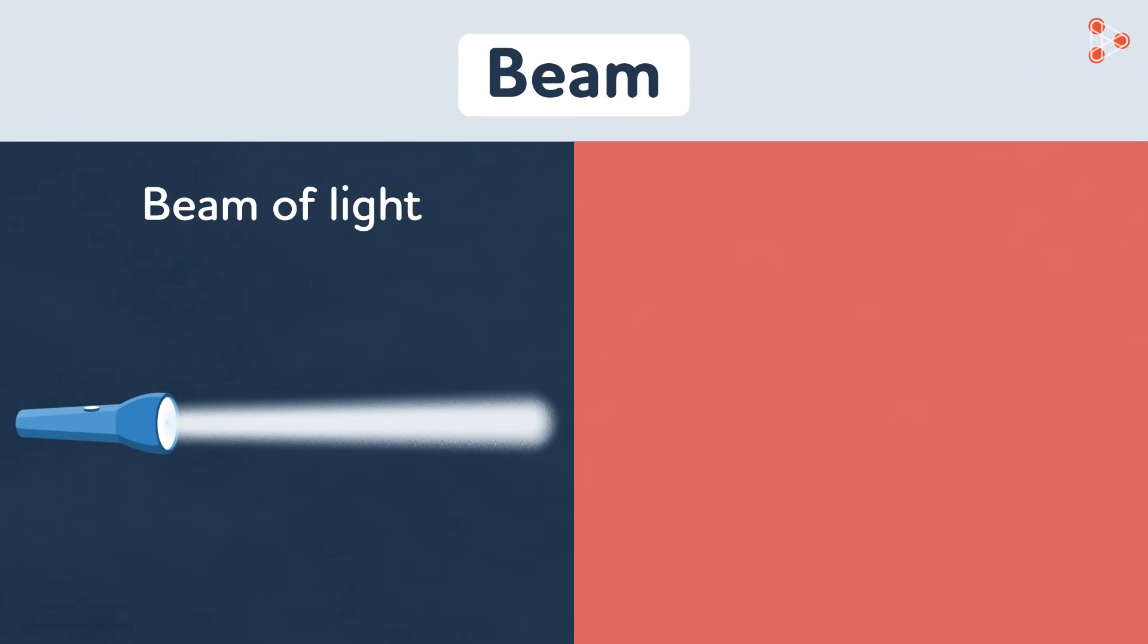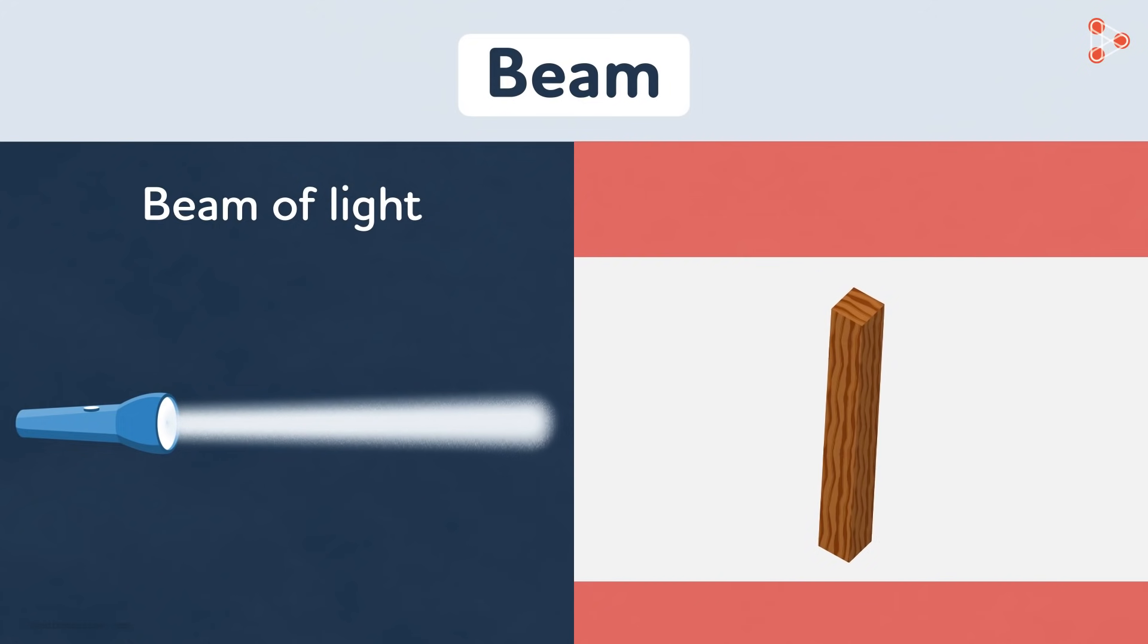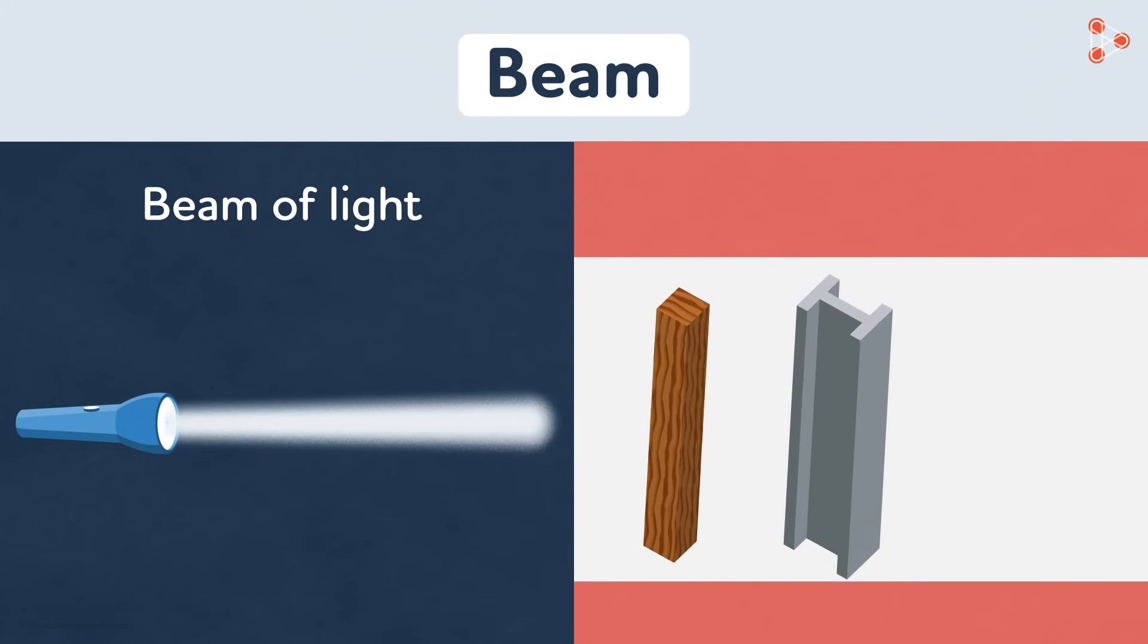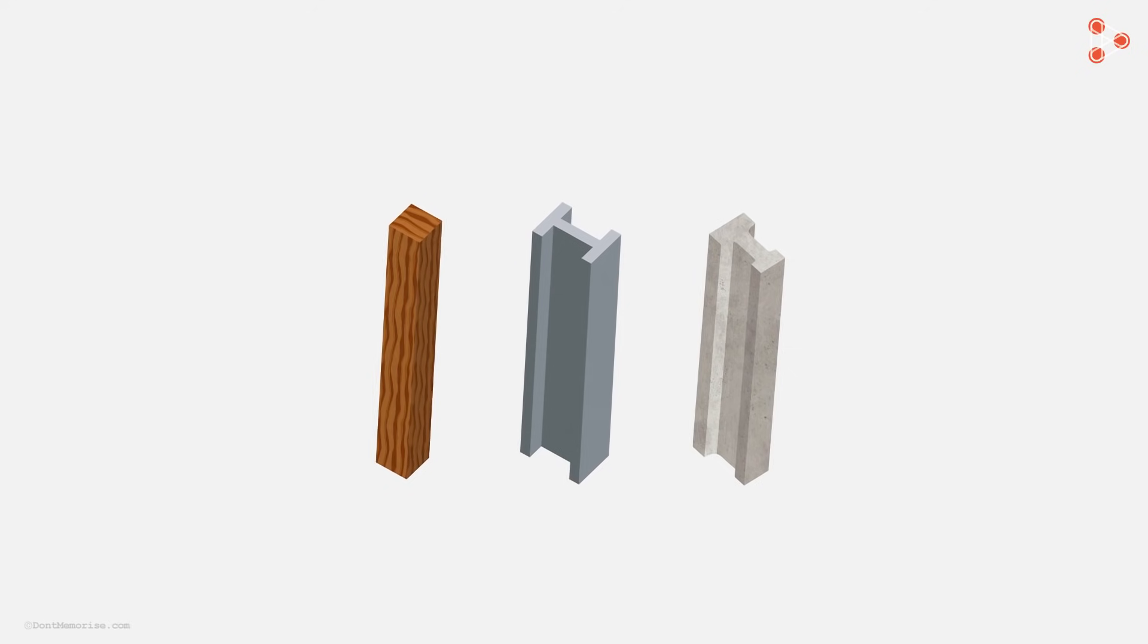In mechanical engineering, a beam is a long piece made of some material. It can be a wooden beam, a steel beam, or a concrete beam. We are of course interested in this kind of beam.